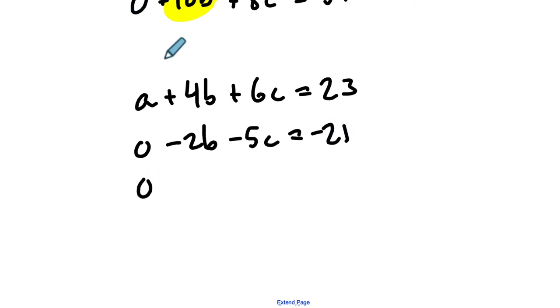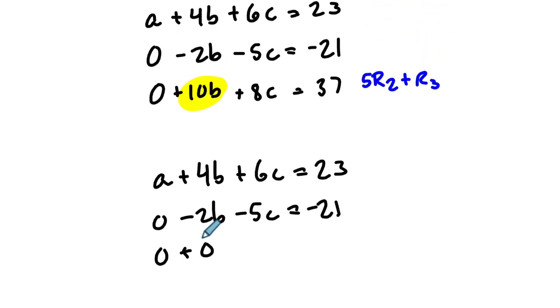So 5 times 0 plus 0 is 0. Negative 10B, which is 5 times negative 2B, plus 10B is 0. So we've zeroed out that term. And then negative 25 plus 8 is negative 17C.